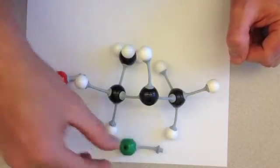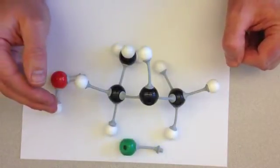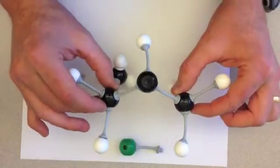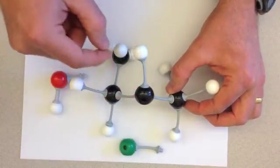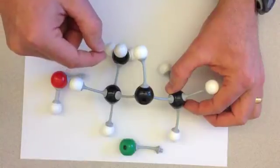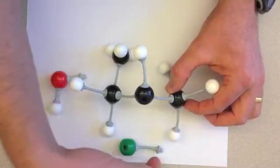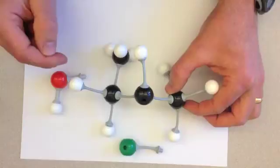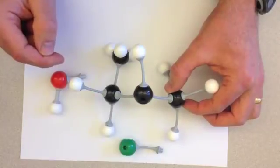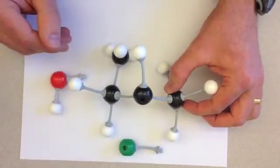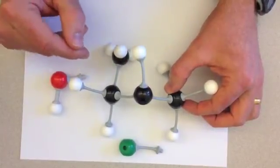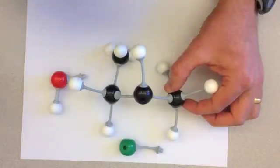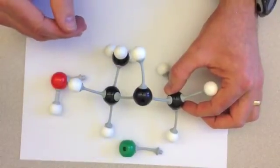When the leaving group leaves, just like in the SN1 reaction, it leaves behind a carbocation intermediate. This secondary carbon only has three bonds associated with it. It has a positive charge because it lost the electrons that it was previously sharing with the chloride. And therefore, it's important to have a substrate that's able to tolerate, able to stabilize this carbocation in order for an SN1 or an E1 reaction to occur.